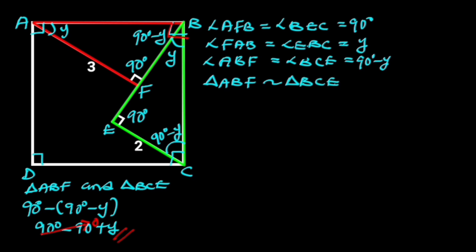Hence, we can say that triangle ABF and triangle BCE are similar triangles. Since both triangles are similar, it follows that both triangles are proportional — that is, they have the same ratios.